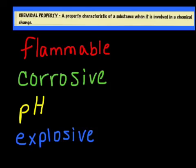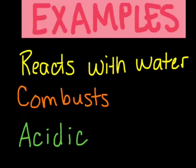Other chemical properties include whether or not it's explosive. Some examples of chemical properties we could use to describe something would be whether or not it reacts with water, if it's combustible, or maybe if it's acidic.